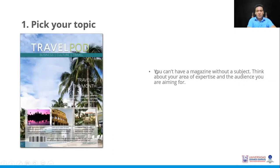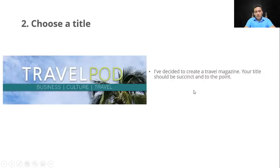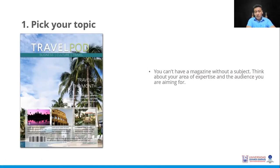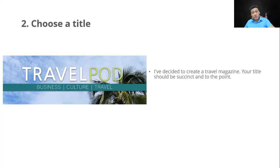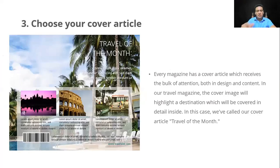It says: 'You can't have a magazine without a subject — think about your area of expertise and the audience you are aiming for.' In this case, you're aiming at an audience of national or international tourists — you decide. And based on that, you build your travel magazine. For the title, it should be something to the point. 'Travel Pot,' for example, can cover business, culture, or travel — specific and without redundancy.